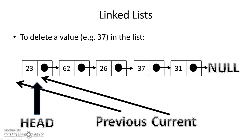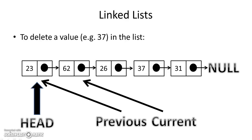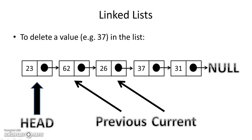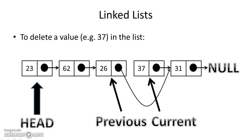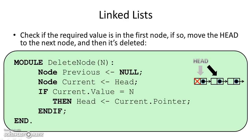To delete a node with value n, we need two pointers: current and previous. Current points to head and previous points to nothing. As we traverse: previous moves to current, current moves to the next value. When we find the value to delete, previous is pointing to the node before it and current is the one we want to delete. We then say: previous dot pointer gets current dot pointer, effectively skipping over the deleted node.